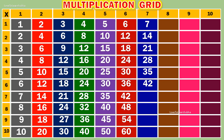7 6s are 42. 7 7s are 49. 7 8s are 56. 7 9s are 63. 7 10s are 70.